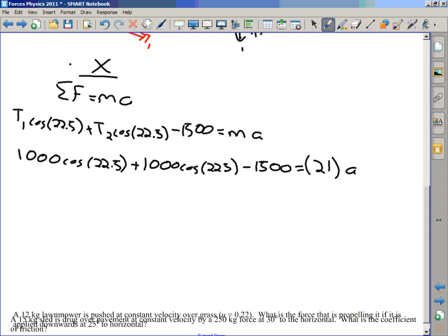So, someone do the entire left side if you want for me. 1000 cosine 22.5 plus 1000 cosine 22.5 minus 1500. 379.759 equals 21A. So now divide both sides by 21.